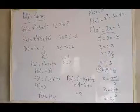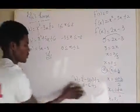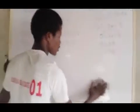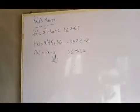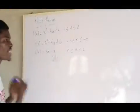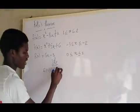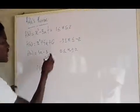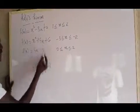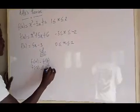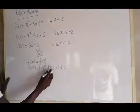Let's move on to the second example. The function is continuous and differentiable, so we check if f(a) = f(b). Here f(a) = f(−3): (−3)² + 5(−3) + 6 = 9 − 15 + 6 = 0.